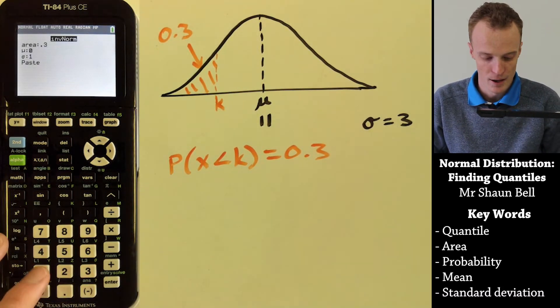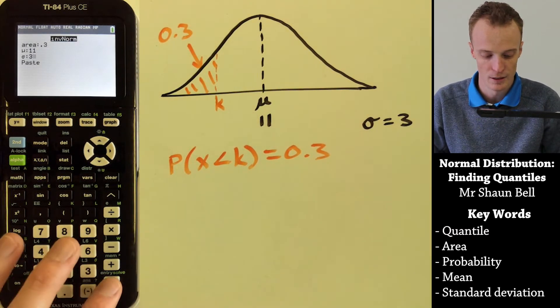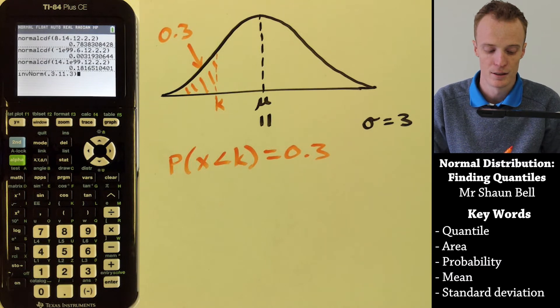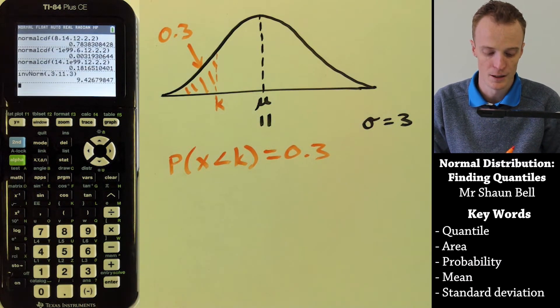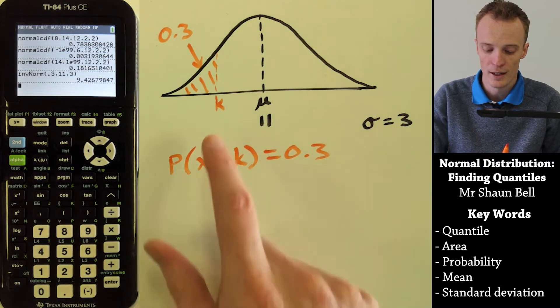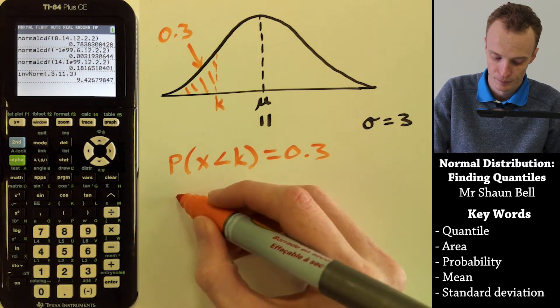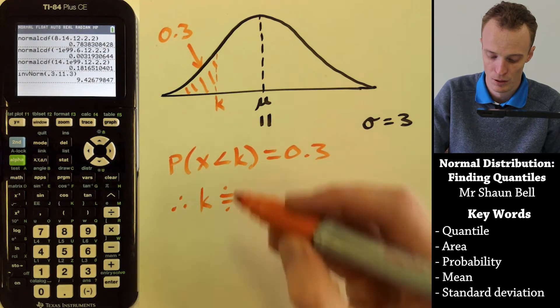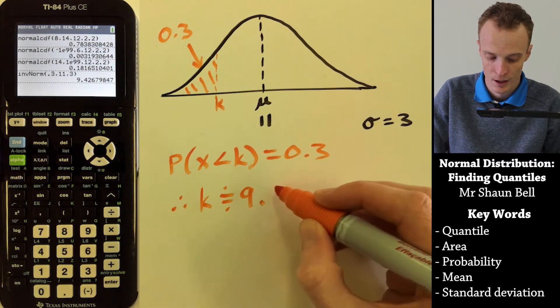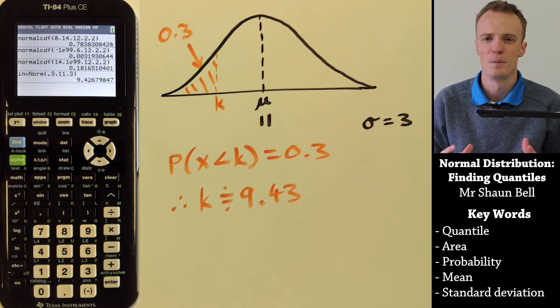Then we enter our mean, which is 11, and standard deviation, which is 3. We hit paste and it'll paste it into our run area. If we hit enter, it'll give you what the K value is for that area. In this case, our K value is approximately equal to 9.43.